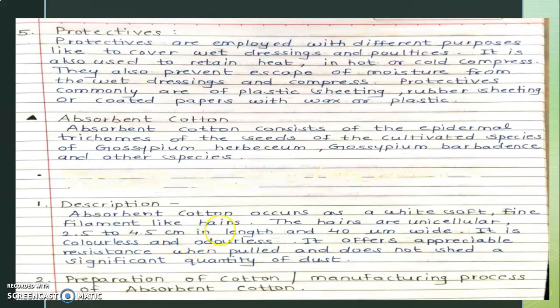Absorbent cotton is colorless and odorless. It offers appreciable resistance when pulled and does not shed a significant quantity of dust. A dust agent test is performed to verify this property.